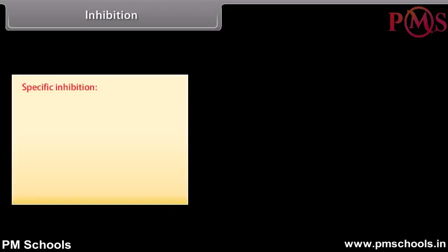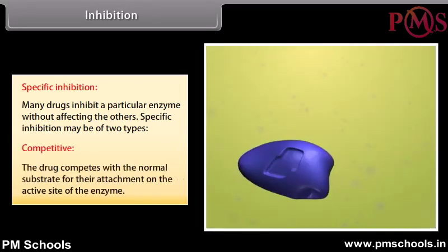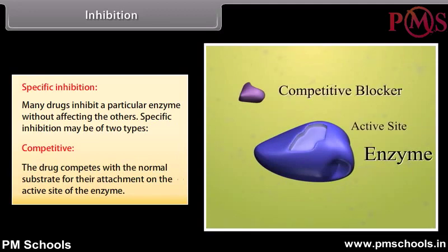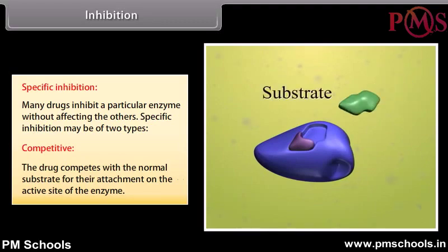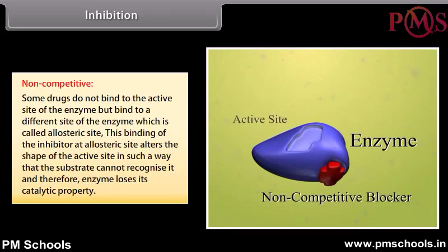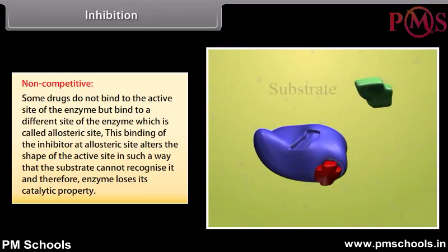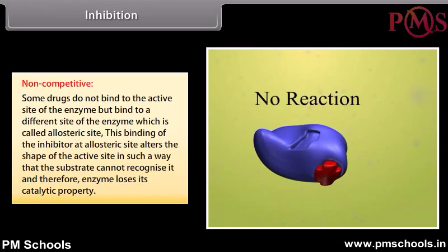Specific inhibition: Many drugs inhibit a particular enzyme without affecting the others. Specific inhibition may be of two types. Competitive: The drug competes with the normal substrate for attachment on the active site of the enzyme. Non-competitive: Some drugs do not bind to the active site of the enzyme but bind to a different site called the allosteric site. This binding at the allosteric site alters the shape of the active site in such a way that the substrate cannot recognize it, and therefore the enzyme loses its catalytic property.